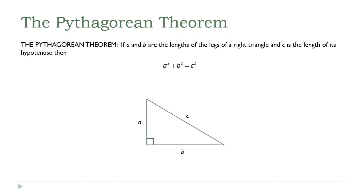The Pythagorean theorem is probably one of the most well-known results in geometry. Most people see this at some point in their high school career, and I suspect that a lot of people, even into adulthood, if they were presented with that formula — a squared plus b squared equals c squared — they'd still manage to dredge up a memory and remember what it is. So it's really a neat result.